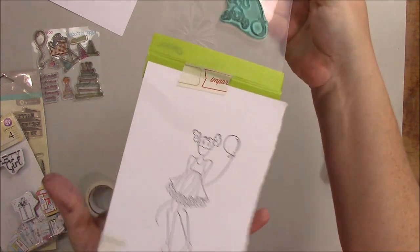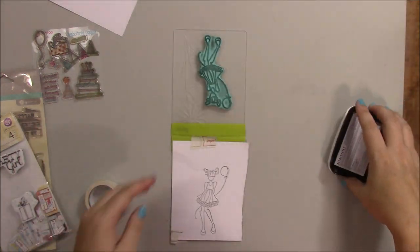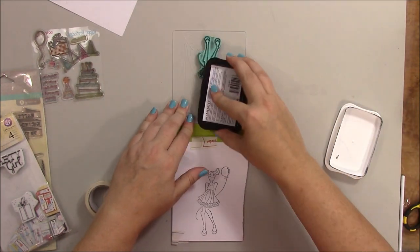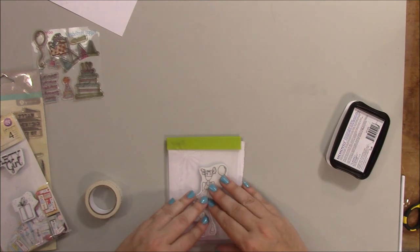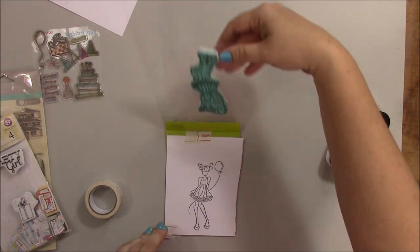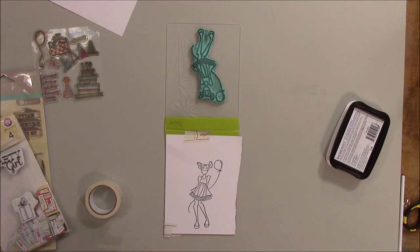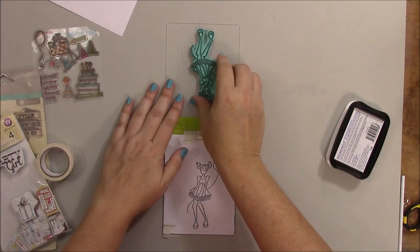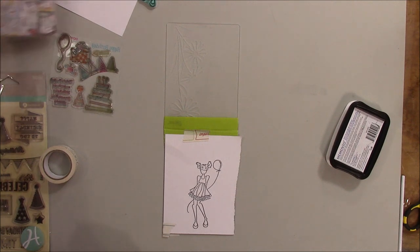Okay. She turned out pretty good, but we'll stamp her again just to show that it's working. As long as the stamp stays in the same spot and the paper stays in the same spot, you should be able to stamp it over and over again. So we've got her down and let's add happy birthday or something.